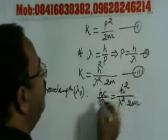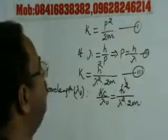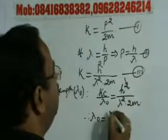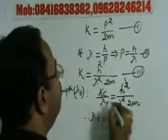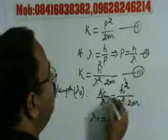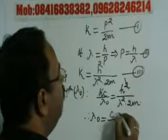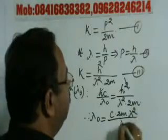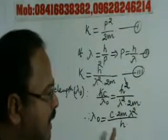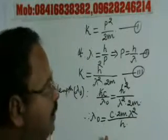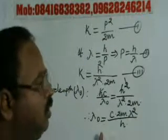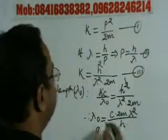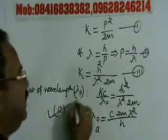Here the h cancels, so we can have lambda naught equal to c · 2m · lambda squared divided by h, giving λ₀ = 2mcλ²/h. This gives the correct option as option A, so our option A is correct.